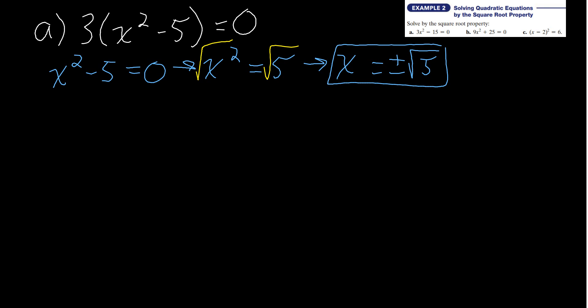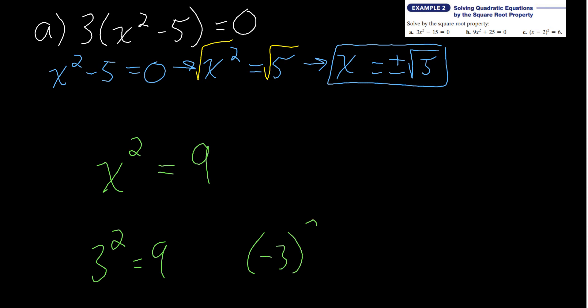Let's explain why we use plus or minus. If x squared equals 9, the first answer you'd say is x equals 3, since 3 squared is 9. But also, negative 3 squared equals 9, because negative 3 times negative 3 is positive 9. That's why we say plus or minus when we take the square root of both sides — funny things happen when you square and take square roots.